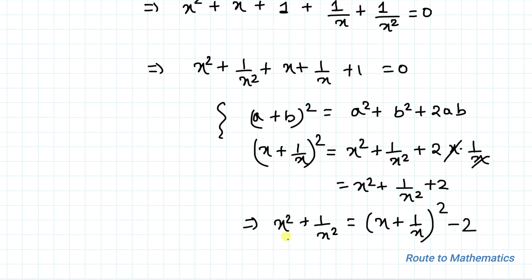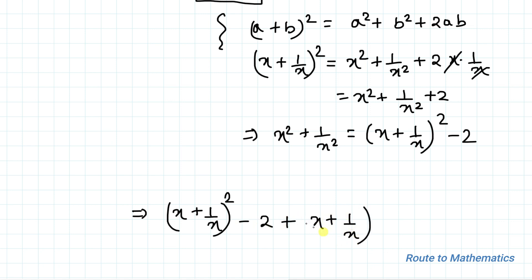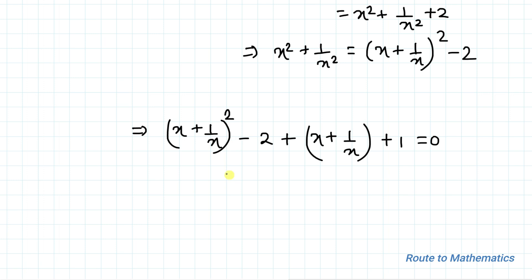Let's substitute x squared plus 1 by x squared as x plus 1 by x whole squared minus 2 into the equation. Now let's substitute t equals to x plus 1 by x. So the equation becomes t squared plus t minus 2 plus 1, which simplifies to t squared plus t minus 1 equals to 0.